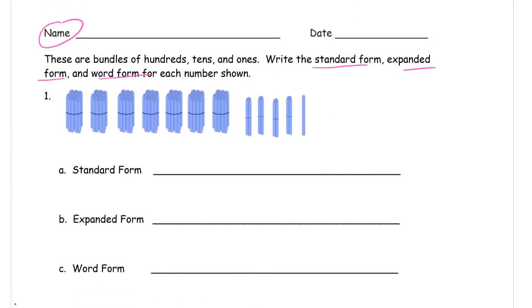So standard form for this - we need to know what we have for hundreds, tens, and ones. A number bond or HTO chart is a great help here. How many hundreds? One, two, three, four, five, six, seven hundreds. How many tens? One, two, three, four tens. And one one.